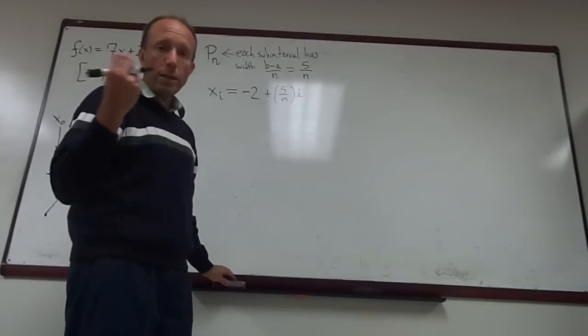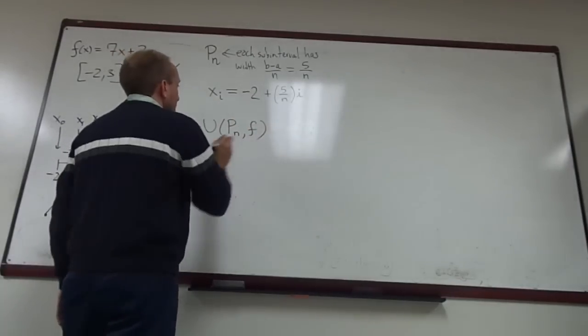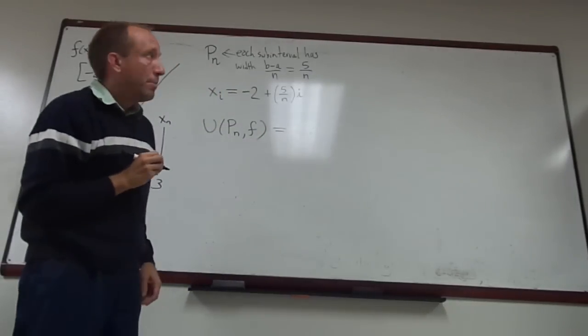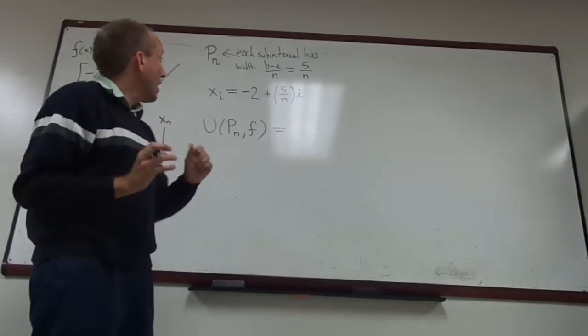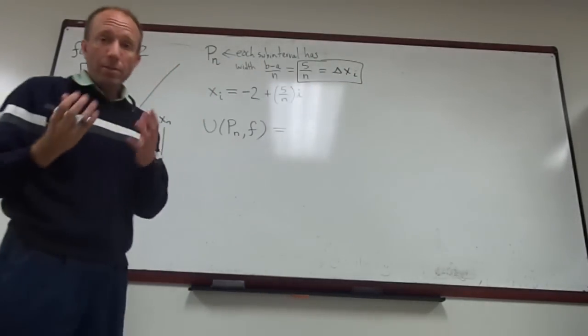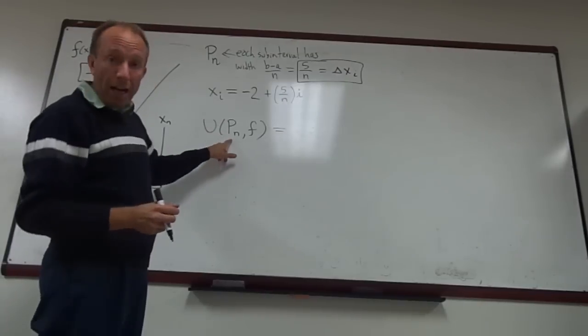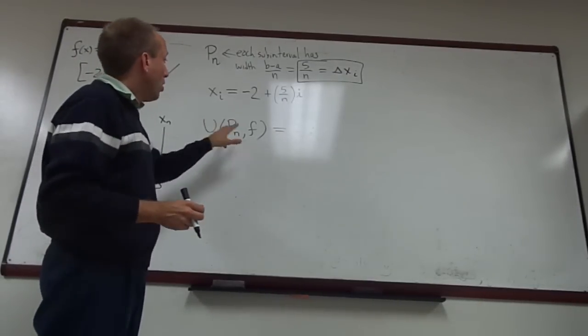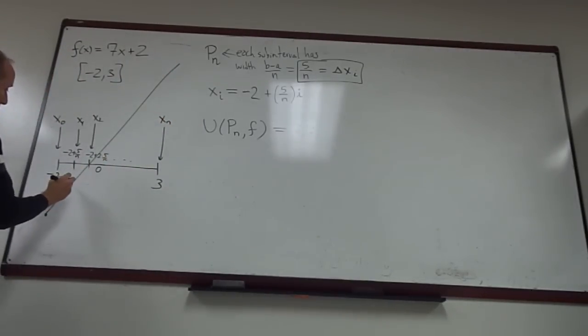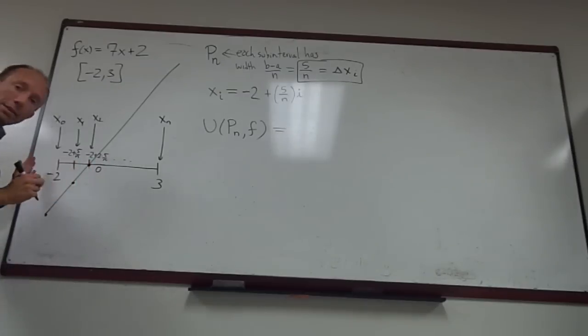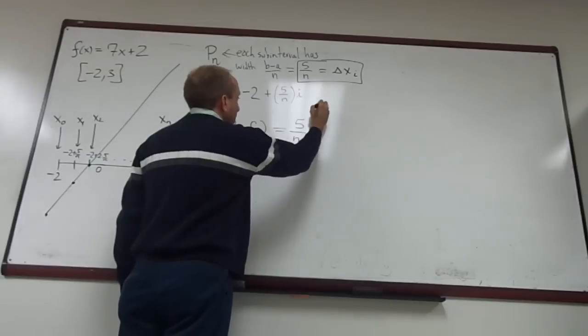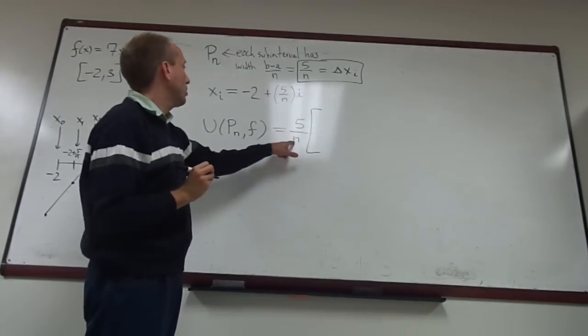So that is one way of creating a partition. And from that partition, we can try to calculate the upper sum of the function with respect to P sub n. Now remember that is a sum of terms. But each of the terms consists of the delta xi's. Notice that the delta xi for each i is just 5 over n. So we're going to multiply 5 over n by the supremum value. Remember when we do the upper sum, it's the supremum of the function on the subinterval.